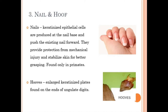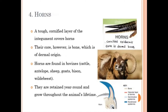Hooves provide support and stability to the animal during movement. Next are horns — a tough, cornified layer of the integument that covers the horn. The core is bone, which is made up of dermis, and on top is the epidermal cornified or keratinized layer.